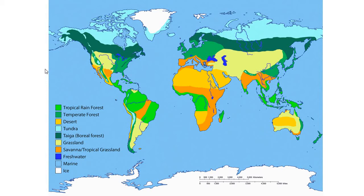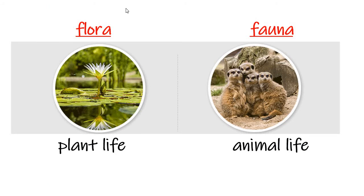As we do this unit, be aware that different science curricula classify biomes differently. Sometimes you'll see savannas and grasslands combined, or different types of forests separated out — such as pine tree forests versus forests with trees that lose their leaves. So depending on the source, they might use different labels for the biomes. We're going to look at seven major biomes through this unit.